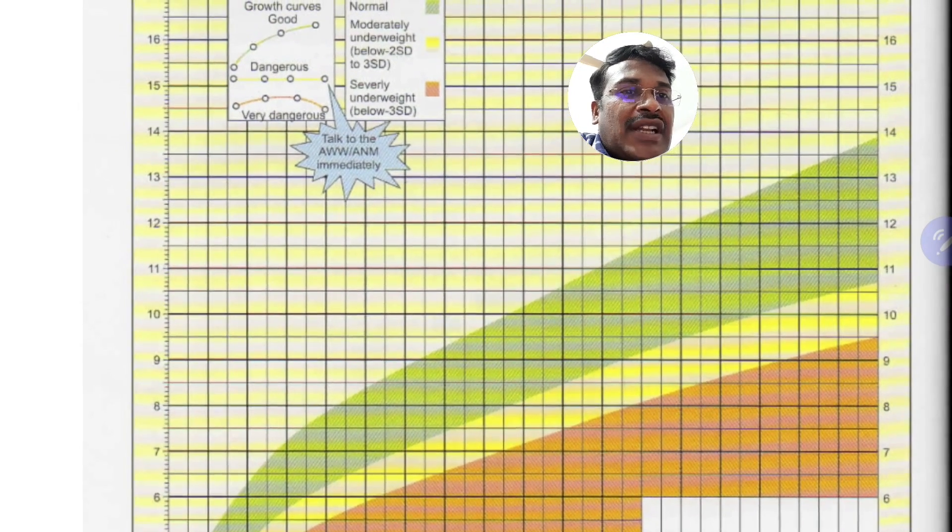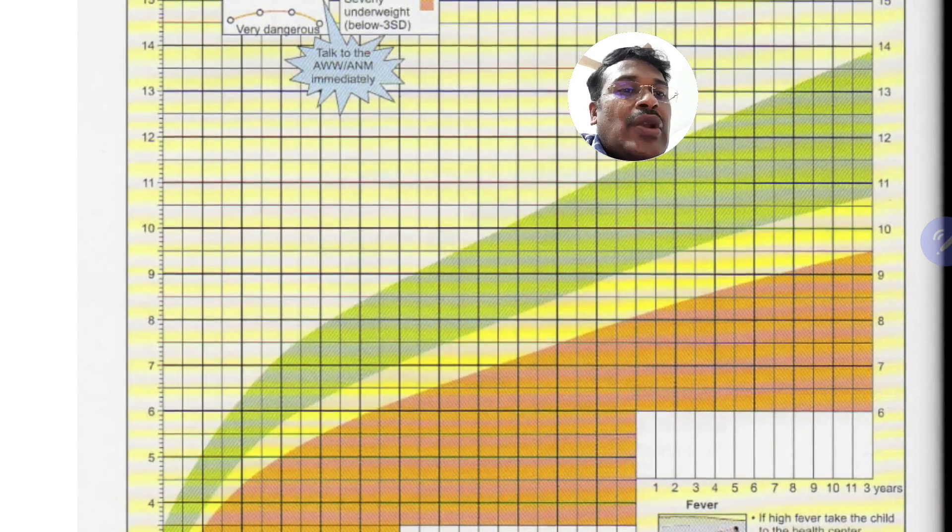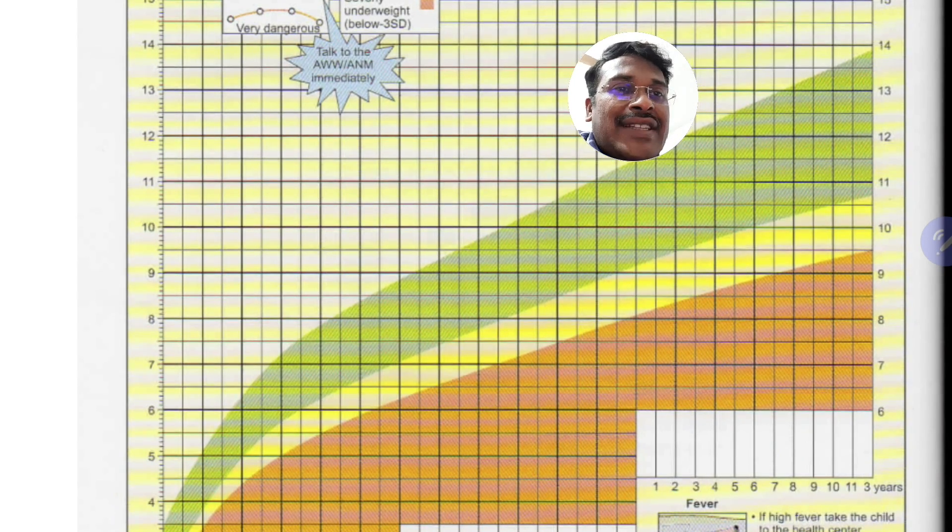What it means is most of the children will fall above the green line or in the green line. But when the children's growth curve goes to yellow or orange zone it indicates some pathology.